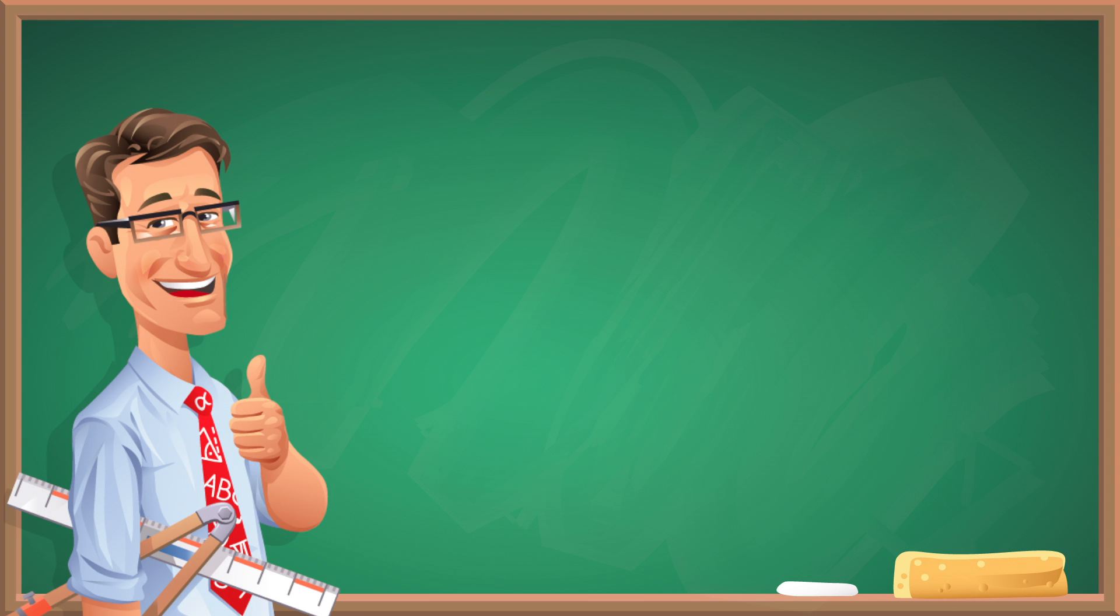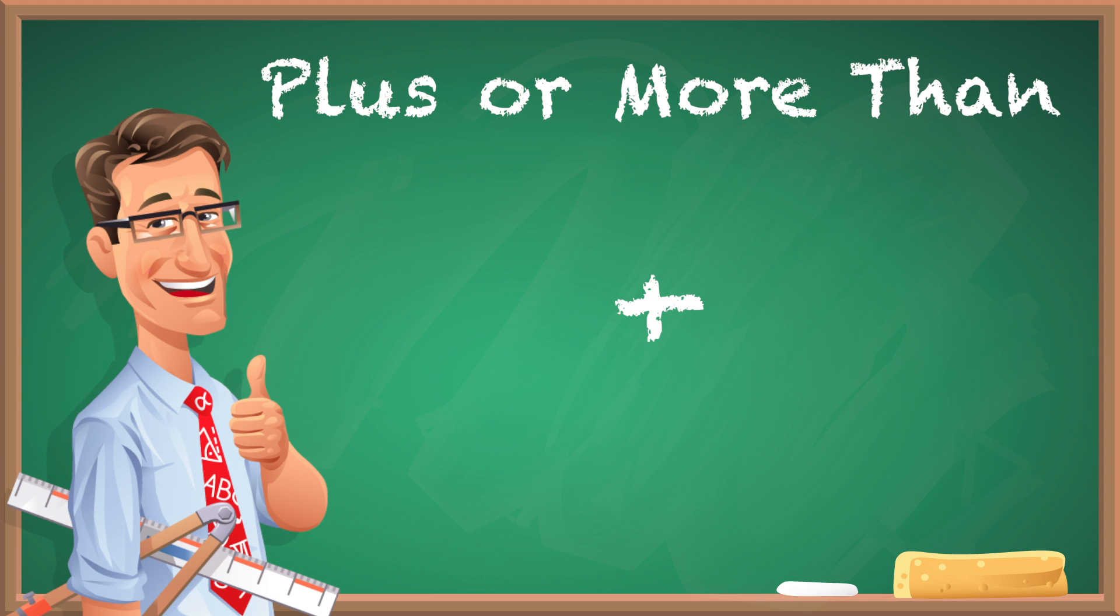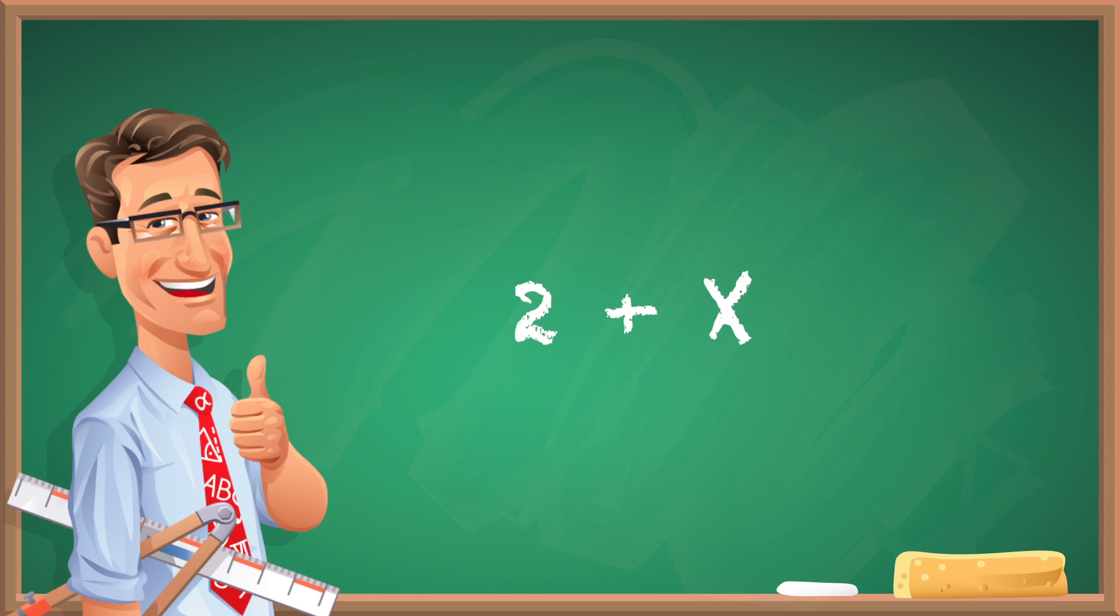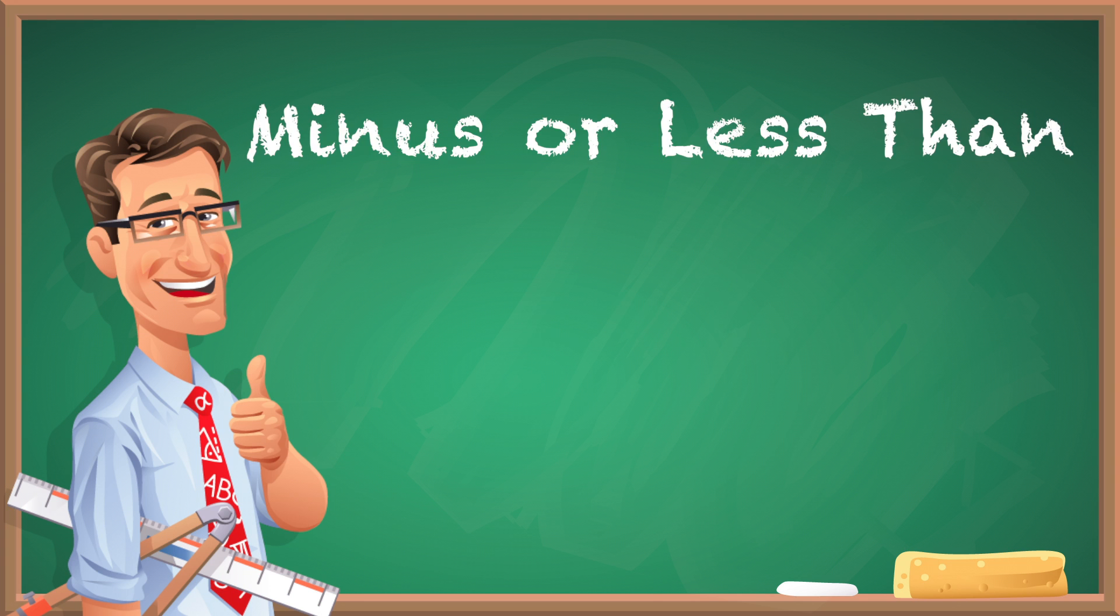If you have a word or phrase that says 'plus' or 'more than,' that means you're adding. For example, 'two more than x' means 2 + x. If you see 'minus' or 'less than,' you're subtracting. So 'five less than r' is r - 5.